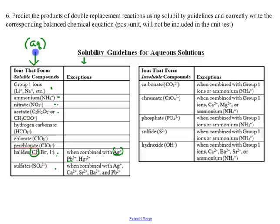These are insoluble, and if they are insoluble, the symbol you would use in the chemical equation is S, or solid. All sulfates are soluble, except when you have silver sulfate, calcium sulfate, strontium sulfate, barium sulfate, and lead-2 sulfate. Those compounds would be insoluble and written in the chemical equation as a solid.